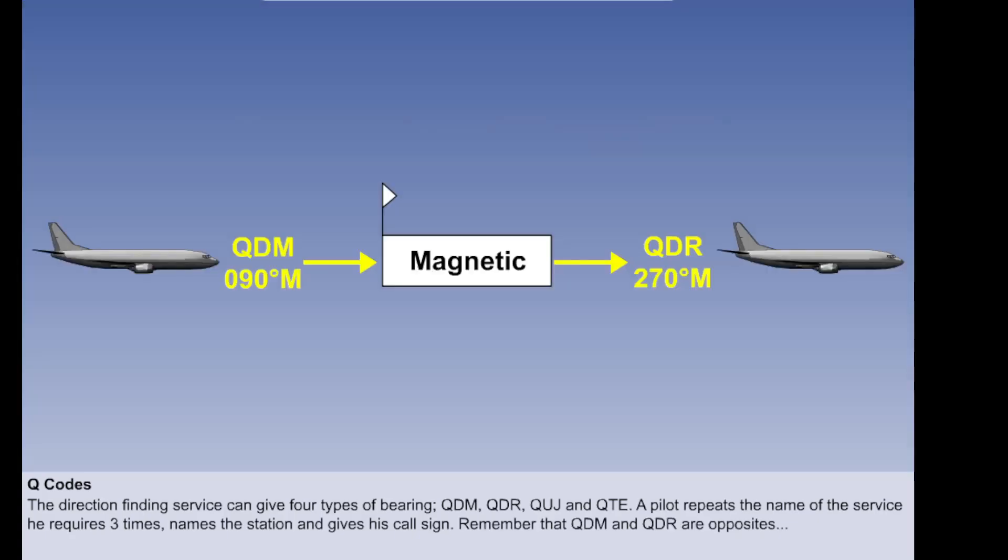Notice that the reciprocal, that is the opposite of QDM, the magnetic track to the station, is QDR, the magnetic bearing from the station. Similarly, the reciprocal of QUJ, the true track to the station, is QTE, the true bearing from the station.